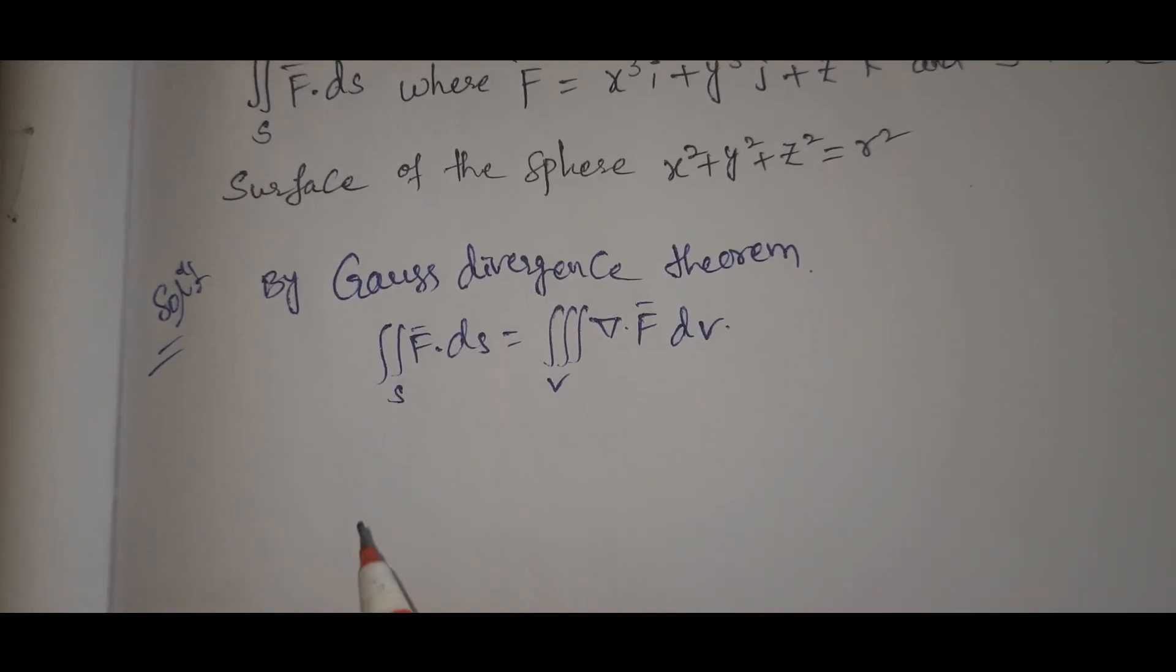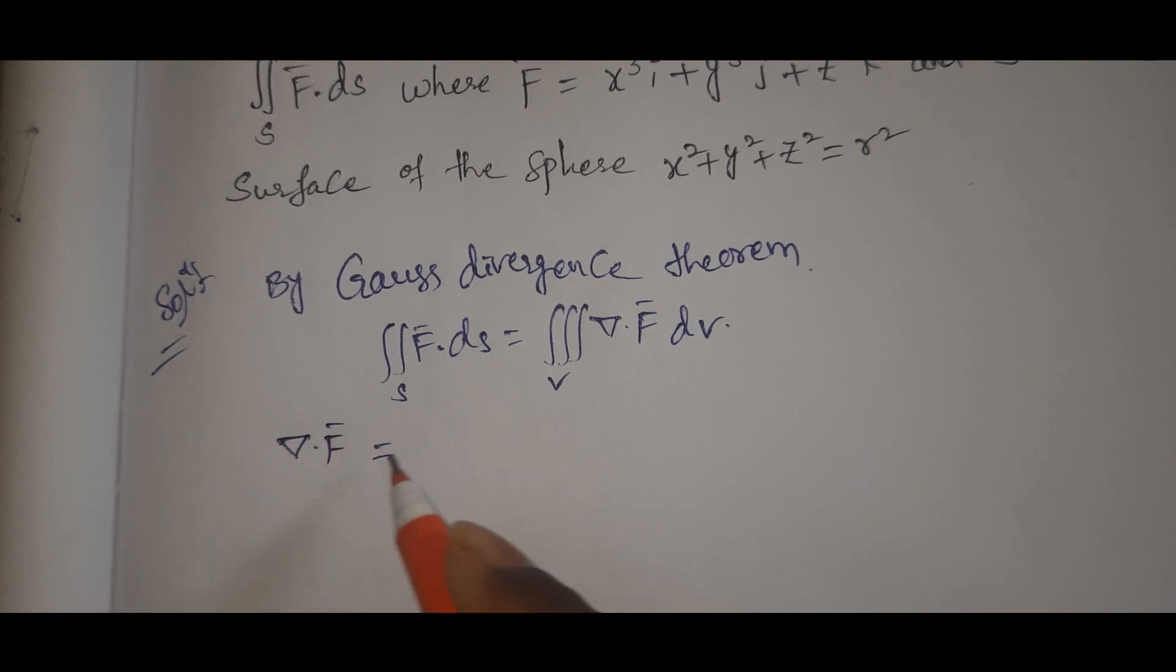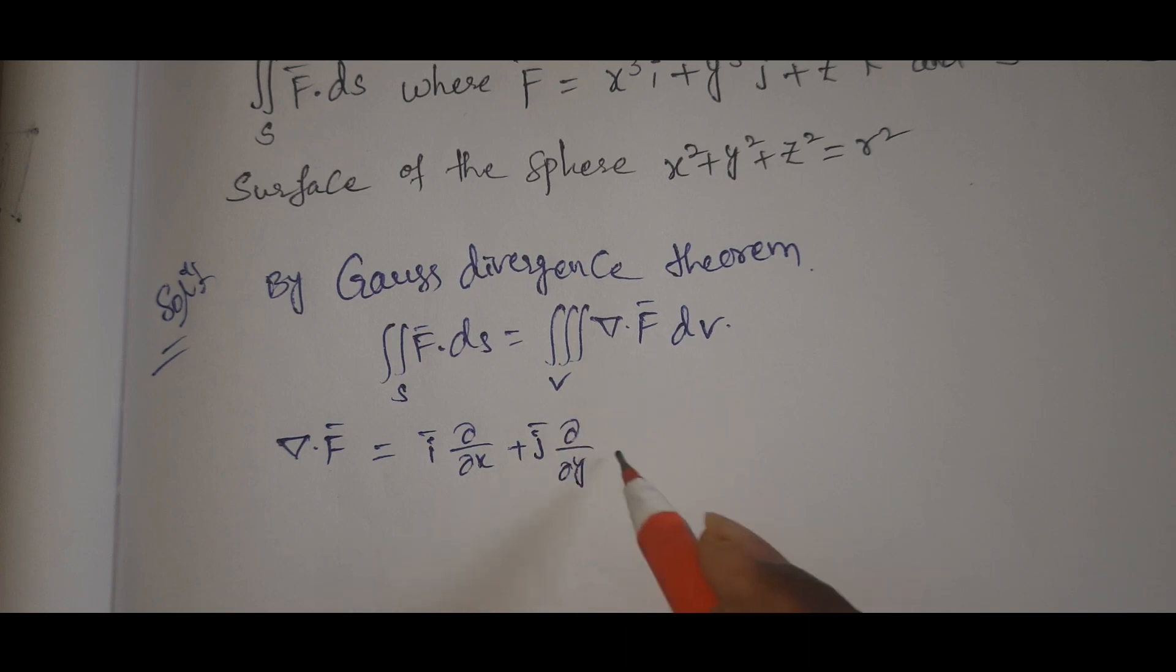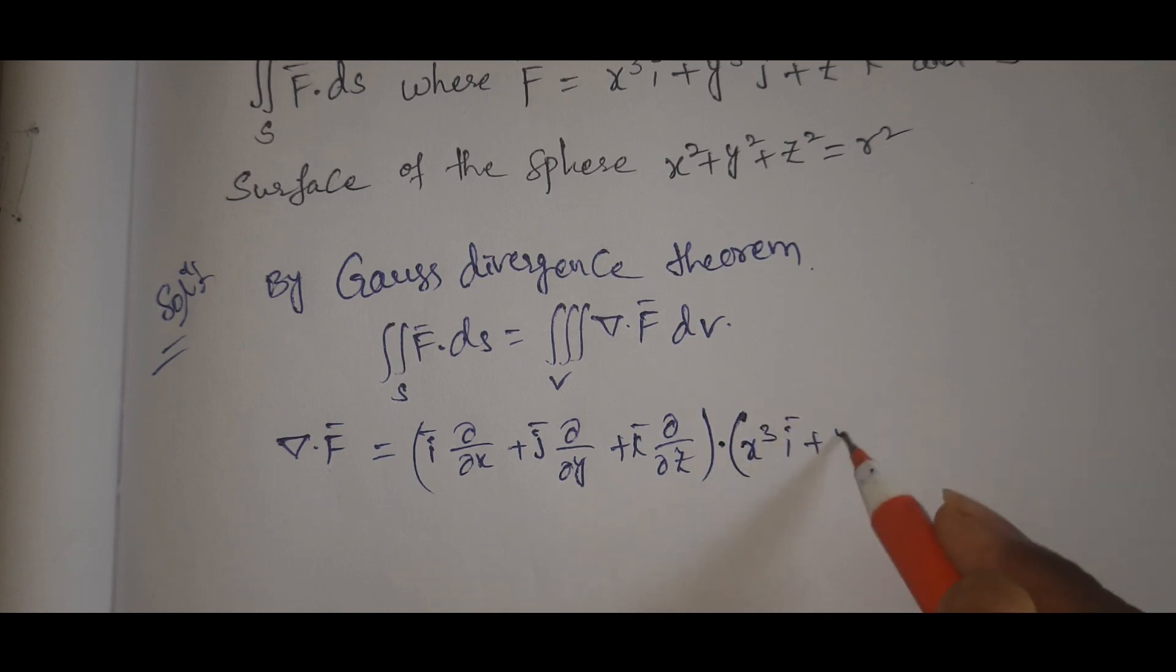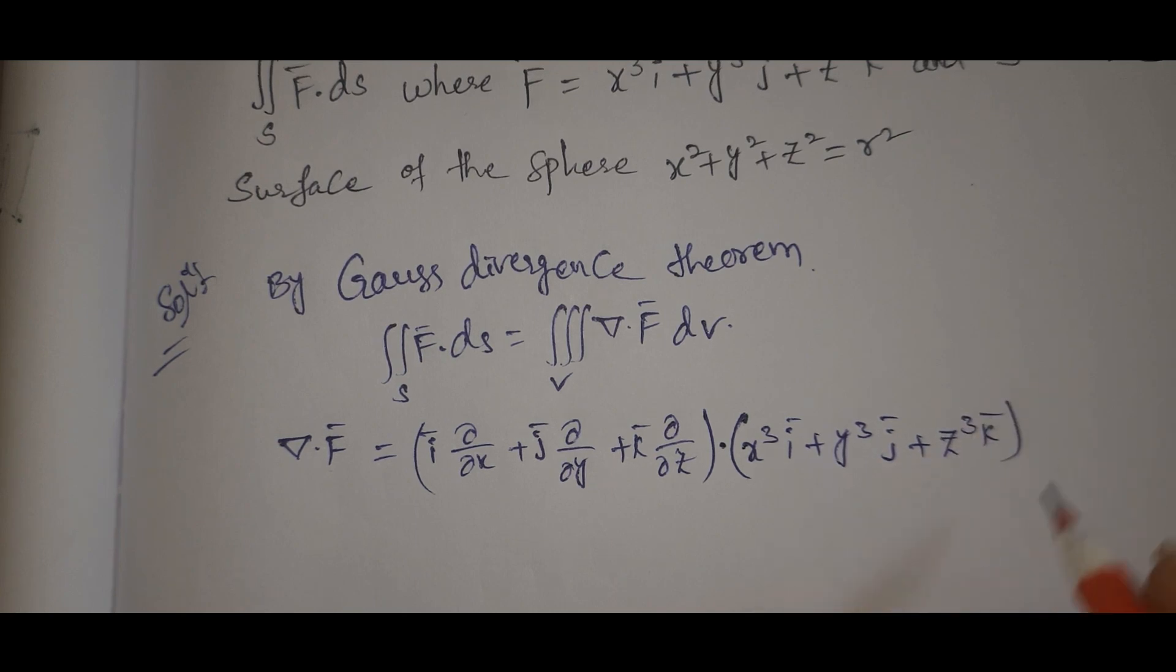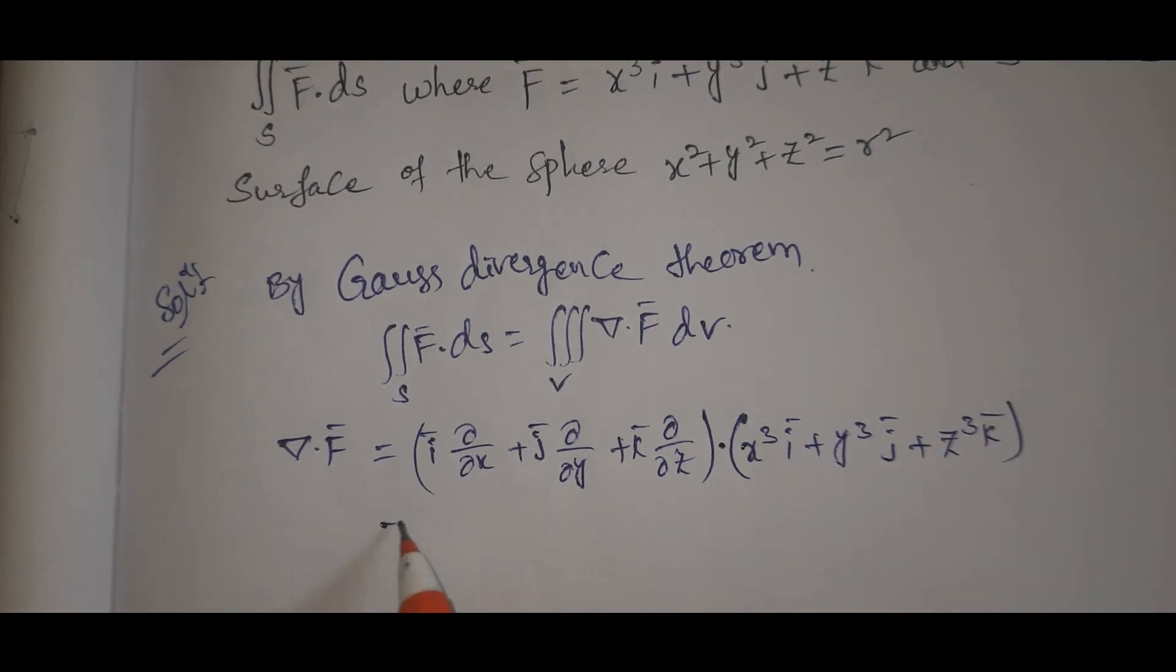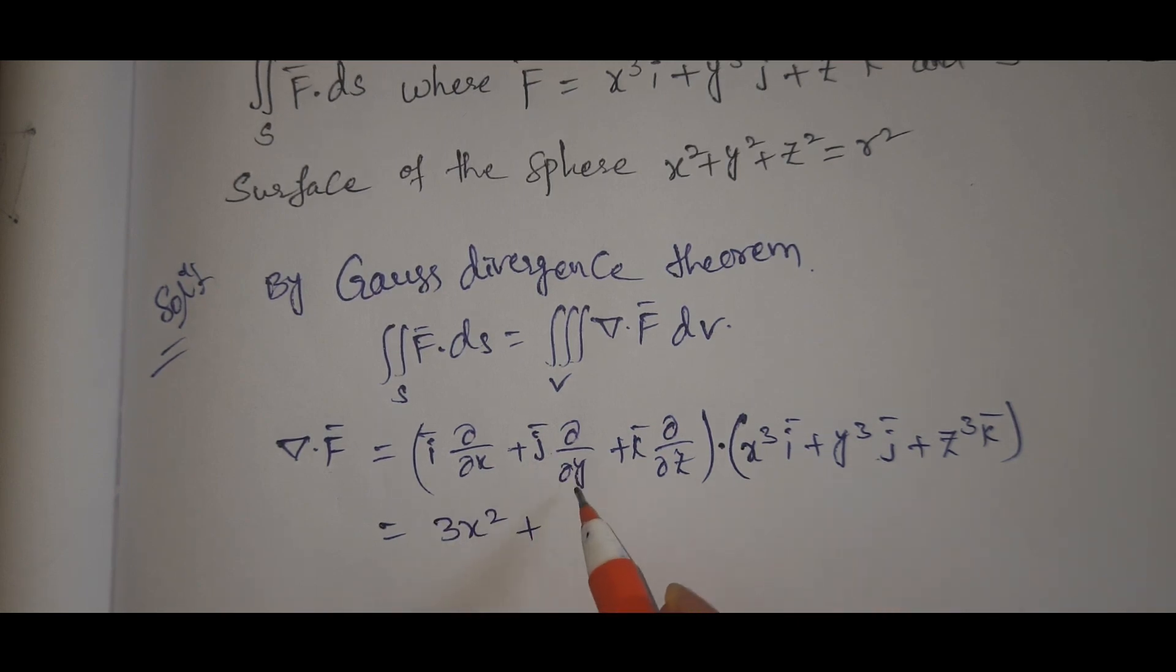Del dot F equals del, which is i bar partial by partial x plus j bar partial by partial y plus k bar partial by partial z, dot F. That's i bar dot i bar times partial by partial x of x cubed, which is 3x squared, plus j bar dot j bar times partial by partial y of y cubed, 3y squared, plus k bar dot k bar times partial by partial z of z cubed, 3z squared.